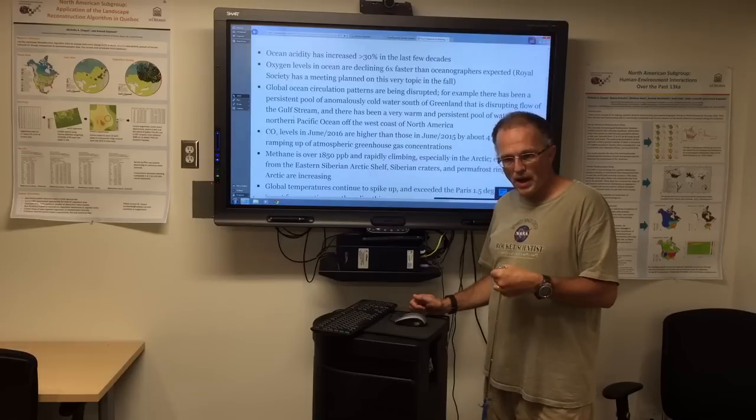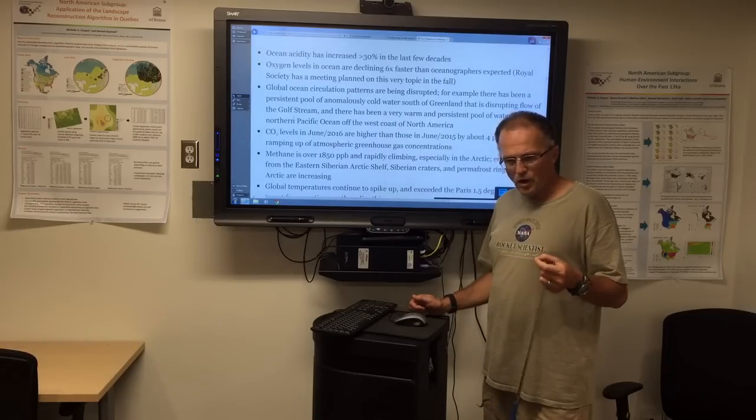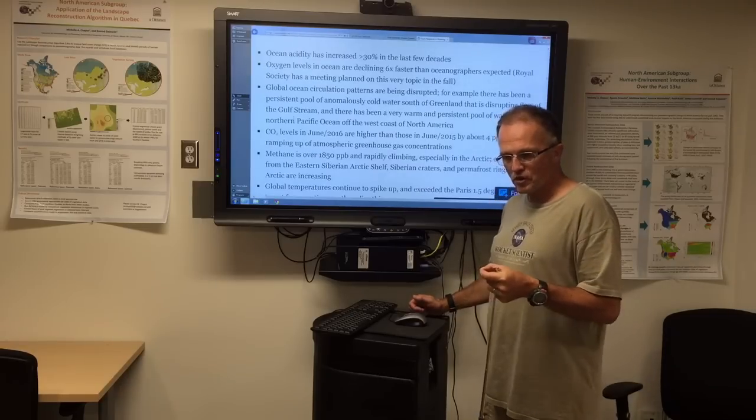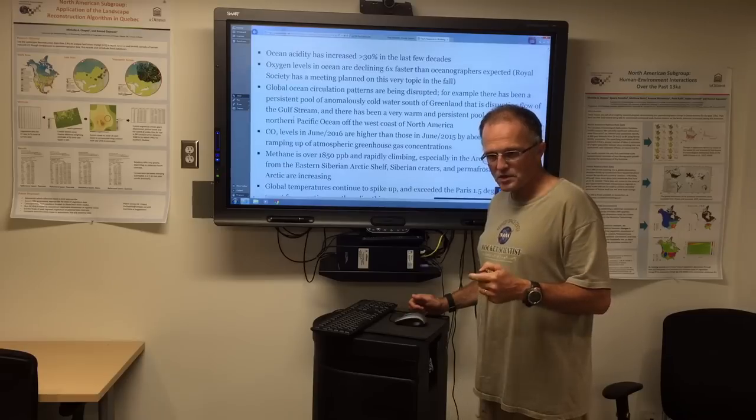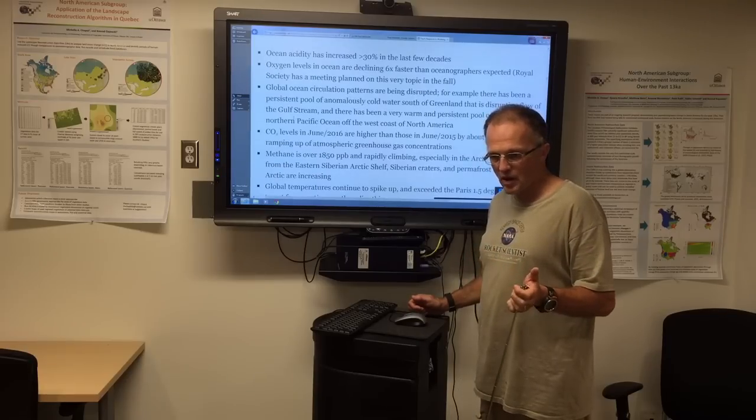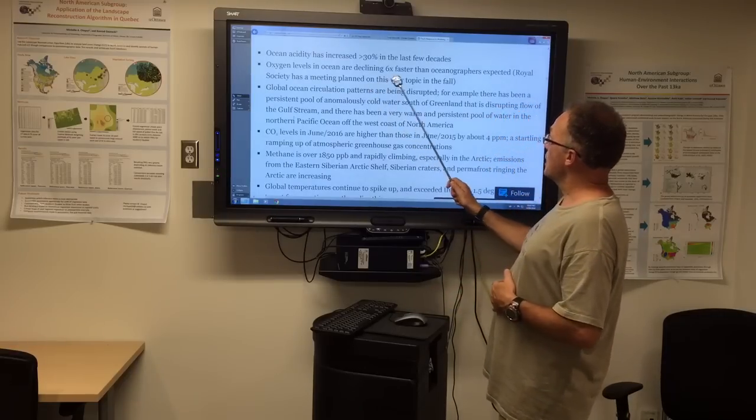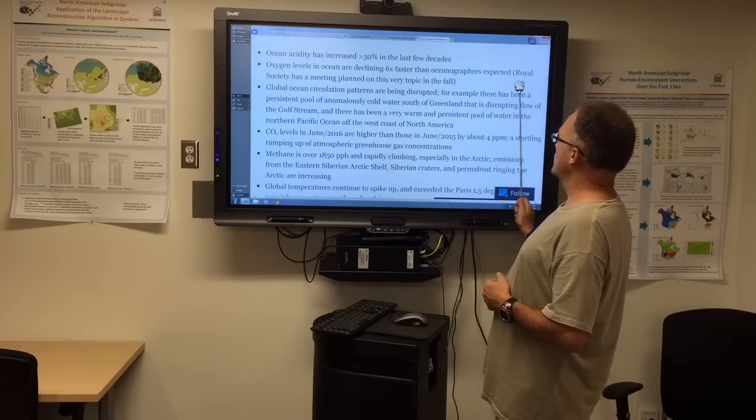And they haven't been properly calculating things based on the Arrhenius equation and other standard equations in chemistry that would indicate the solubility of oxygen versus temperature. So the oceans are warming up, and therefore, they're not able to dissolve as much gas. It's interesting because warmer oceans can absorb solids more easily, such as salt, for example, the saturation levels go up, but gas is the opposite. So the oxygen levels are actually declining much faster than the oceanographers expected.